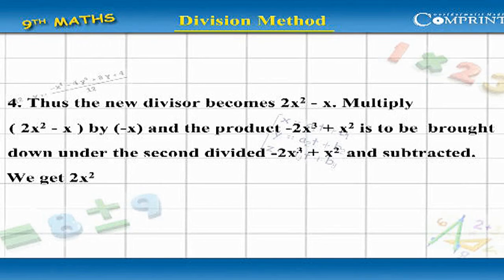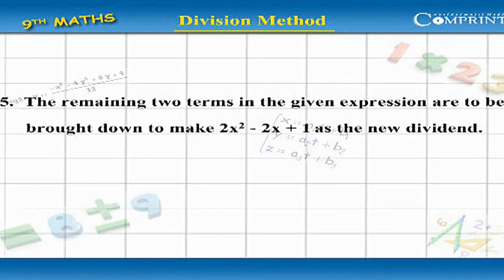Step 4: Multiply 2x squared minus x by minus x, and the product, minus 2x cubed plus x squared, is to be brought down under the second dividend, minus 2x cubed plus x squared, and subtracted. We get 2x squared. Step 5: The remaining two terms in the given expression are to be brought down to make 2x squared minus 2x plus 1 as the new dividend.